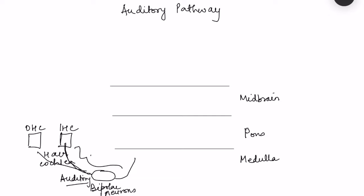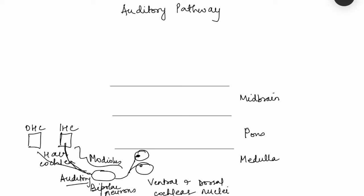The spiral ganglion is located in the modiolus of the cochlea. At the medulla, all axon fibers synapse in the ventral and dorsal cochlear nuclei. This is the first synapse in the auditory pathway. From the ventral and dorsal cochlear nuclei, there is diversion of pathways in four directions.